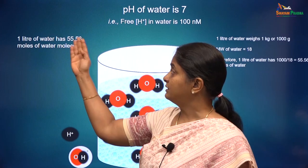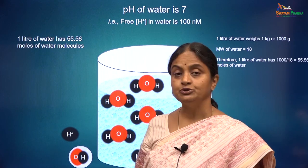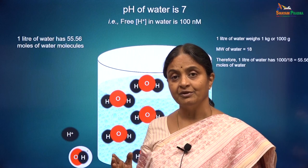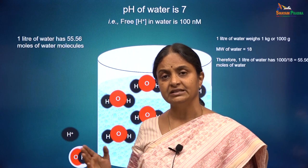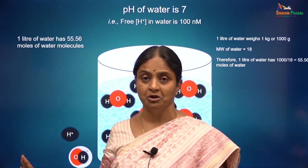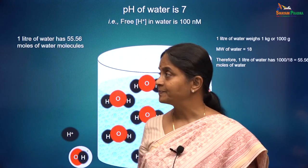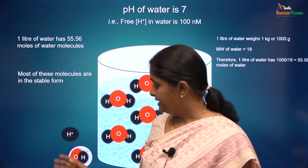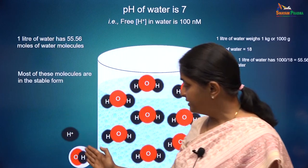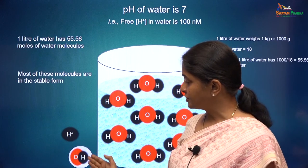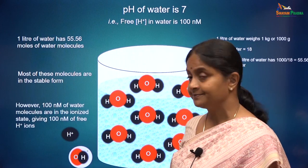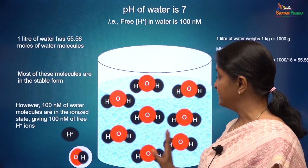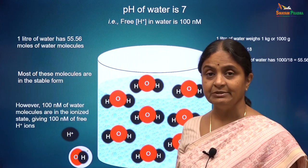Each mole will have Avogadro's number of molecules in it. Therefore, 55.56 moles will have 55.56 times Avogadro's number of water molecules. Of that, only 100 nanomoles of water molecules are ionized, whereas most of them remain in the stable state.